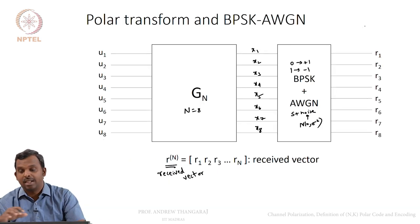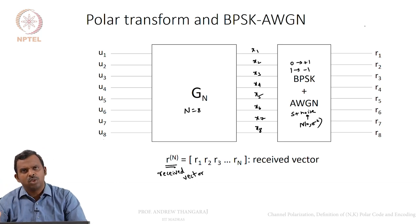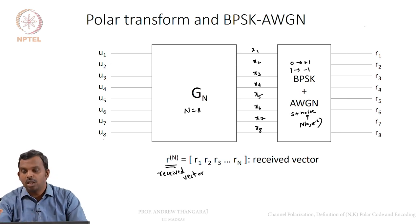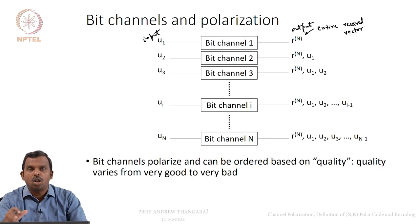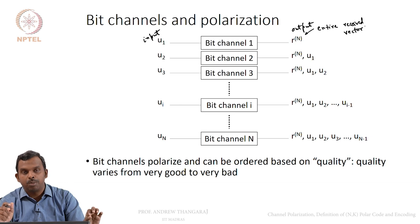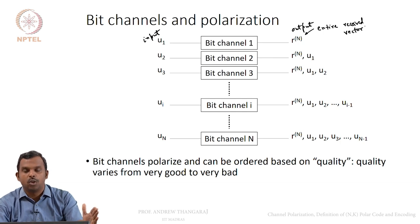We are viewing the previous channel in a different way. Remember, the first bit affects all the transmitted bits in some way, so all received values will have some information about the first bit. It is not wrong to view it this way — take input as U1, and imagine the bit channel has a huge output consisting of the entire received vector collected together.